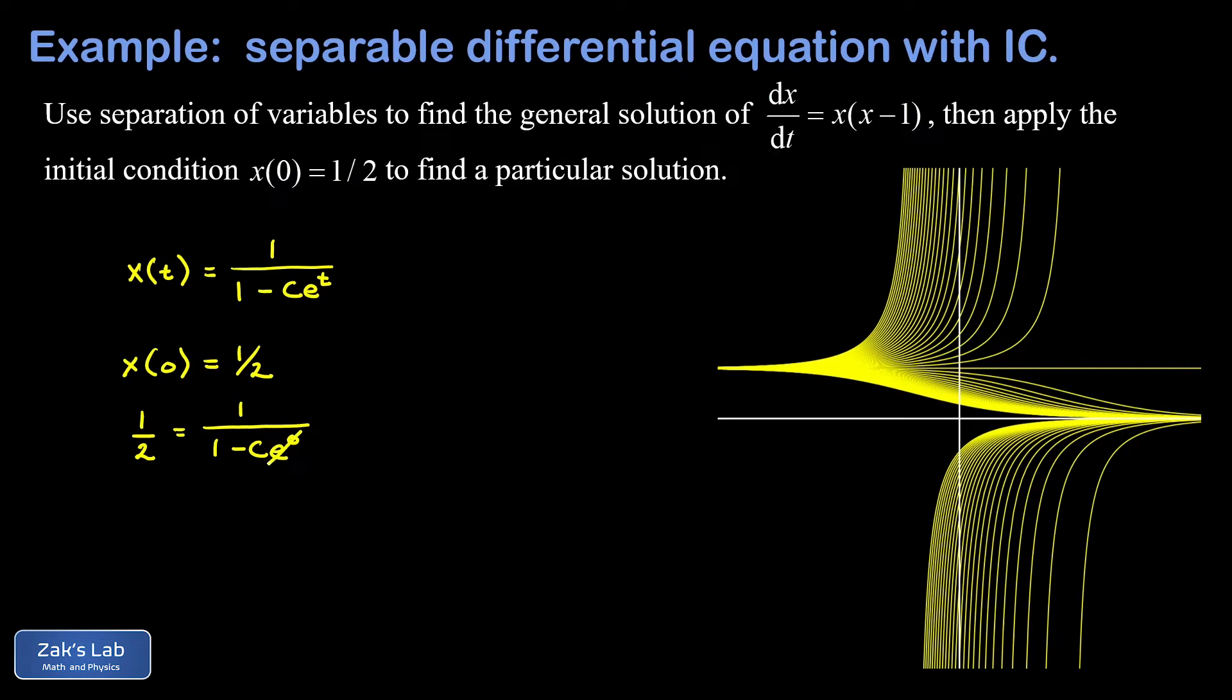Well, e^0 is just 1, so I don't have to worry about that piece. And then solving this for c, I can see on the left side, I have 1/2. On the right side, 1/(1-c). And that means 1-c must be 2. And adding c to both sides and subtracting the 2, I end up with c equals negative 1.